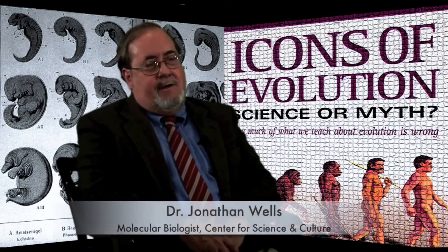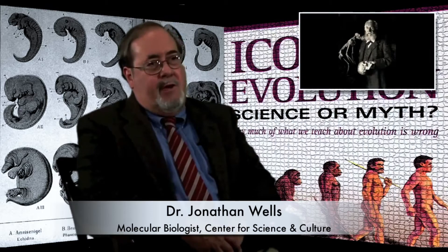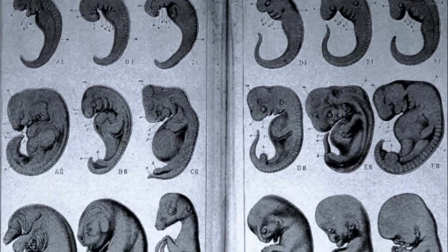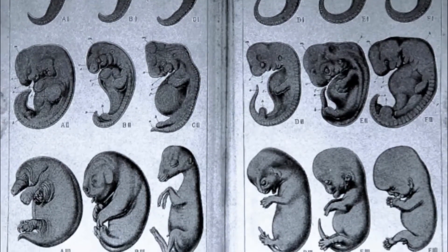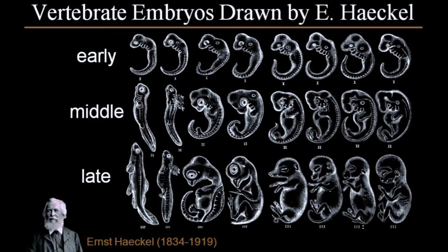Another icon I wrote about was a set of drawings made by 19th century German Darwinist Ernst Haeckel of vertebrate embryos. Darwin knew that the fossil evidence was not particularly helpful to his theory, so in Darwin's own opinion, the best evidence for his theory was what we see in embryos. He believed and wrote in The Origin of Species that embryos in the same class or group are most similar in their early stages and become different only as they develop. He thought the early stages show us the form of the ancestor in its original form. Ernst Haeckel made some drawings based on this idea, and these drawings became quite famous.